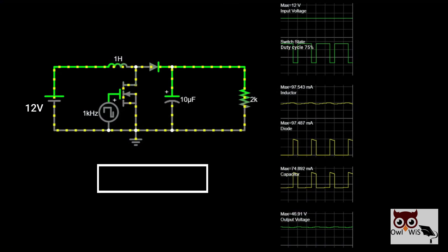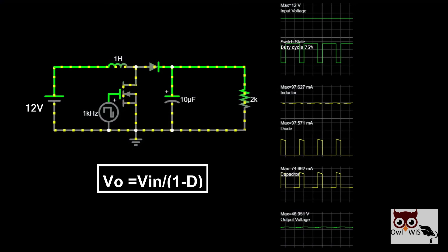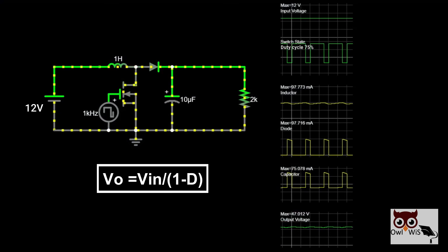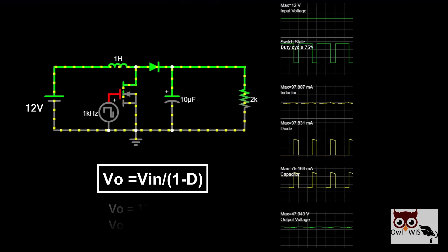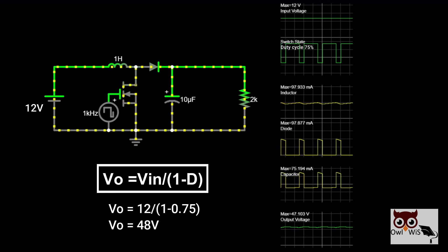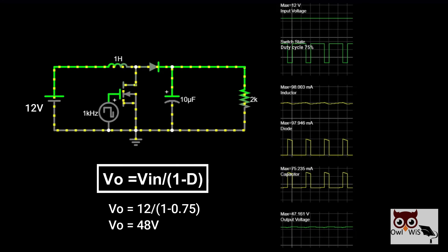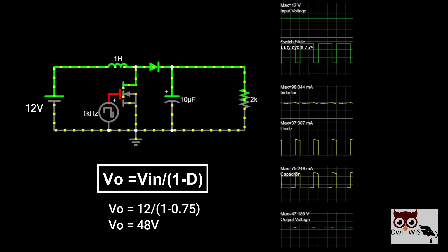The output voltage is equal to the input voltage divided by 1 minus duty cycle. So if the input voltage is 12V and we are using a duty cycle of 75%, we will get 48V as the output.